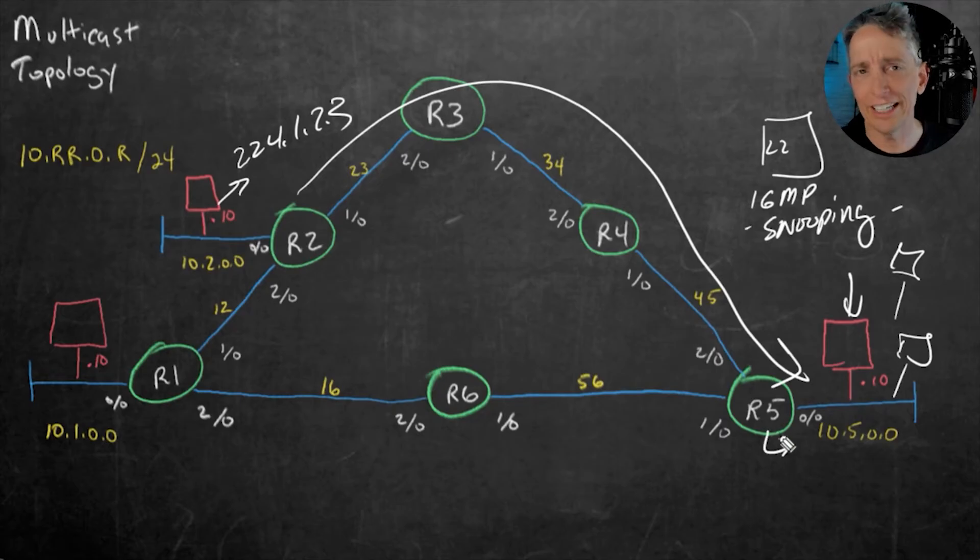This router right here is issuing member reports periodically on this segment. Basically it's IGMP messages saying, hey, who still wants this group? Are there anybody who still wants this group on this segment? And the clients can respond back yes or no.